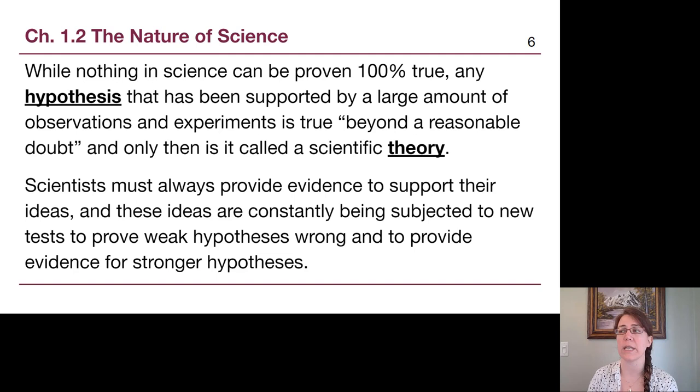And then we call that a scientific theory. We may use the word theory in everyday language in a different way, but it is important for us to understand that the word theory in a science context means an idea that has been proven true beyond a reasonable doubt. We can never be 100% certain, but it fits every single piece of evidence, because remember, it only takes that one test to prove something false. So if it's a theory, it has not been proven false. That's true for the theory of gravity, the theory of climate change, the theory of evolution, and so we need to understand that context in science.